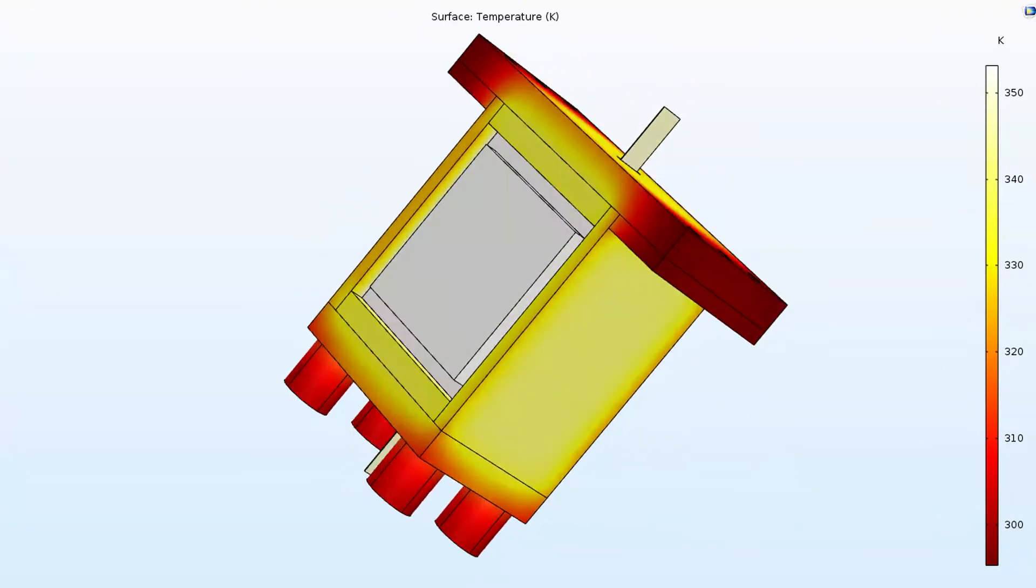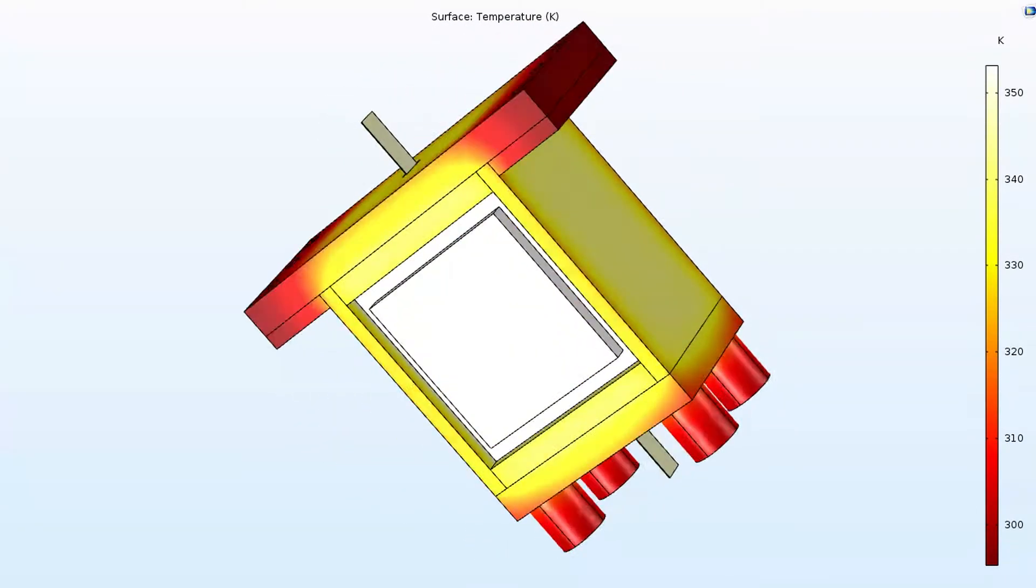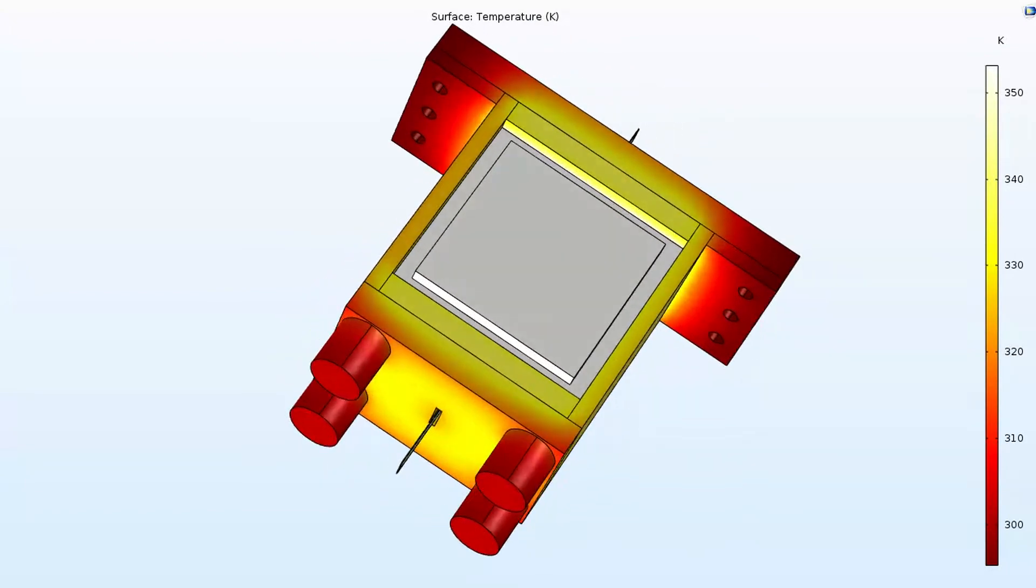The ABS enclosure has significantly lower temperatures around the adhesive of the feet and the bolt holes to avoid thermal stresses at the joints.